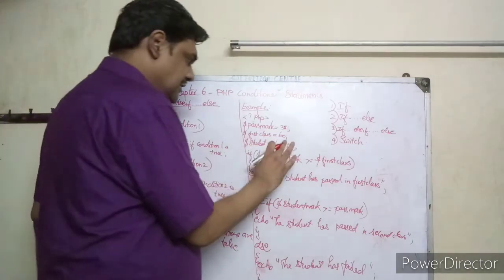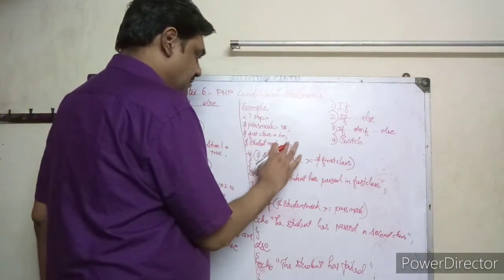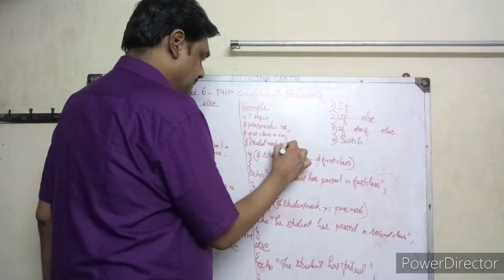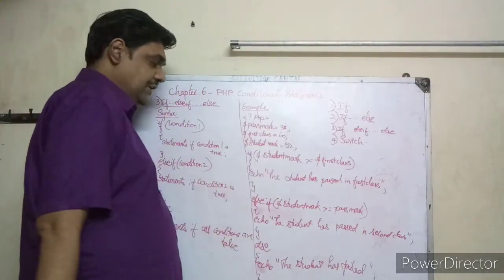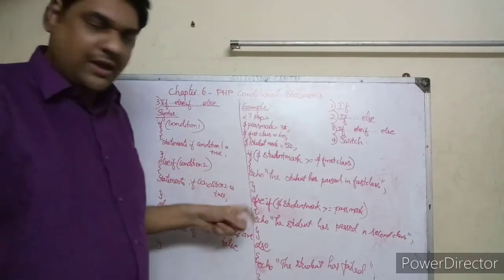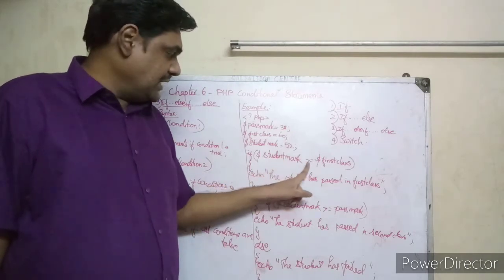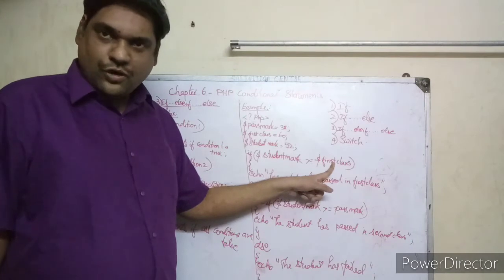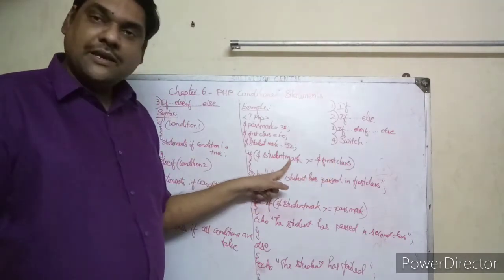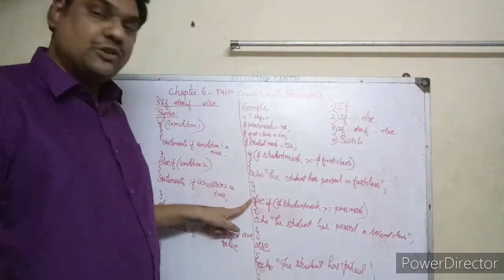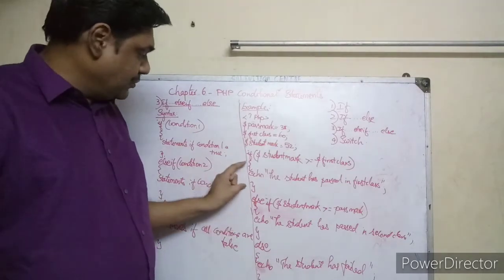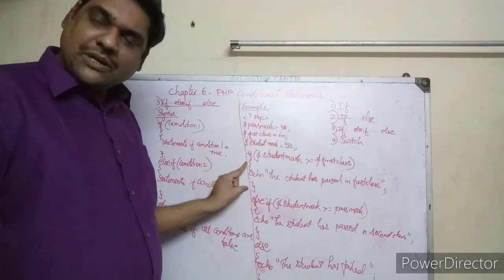Suppose here is 52, student mark 52. So now what do you do? Student mark 52, is 52 greater than or equal to 60? No, false. False means it will go directly to else-if, the computer is going to go there.